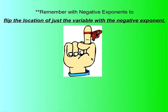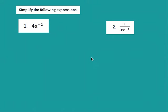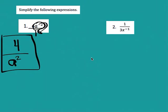Let's take a look at number 1. I have 4 times A to the negative 2. The 4 doesn't have a negative exponent, so it stays on top. The A to the negative 2 is negative on top, so I need to flip it to the bottom. Whenever there's no bottom written, you can assume it's over 1. So I take A to the negative 2, flip it to the bottom, and it becomes A to the positive 2. The answer is 4 divided by A squared.